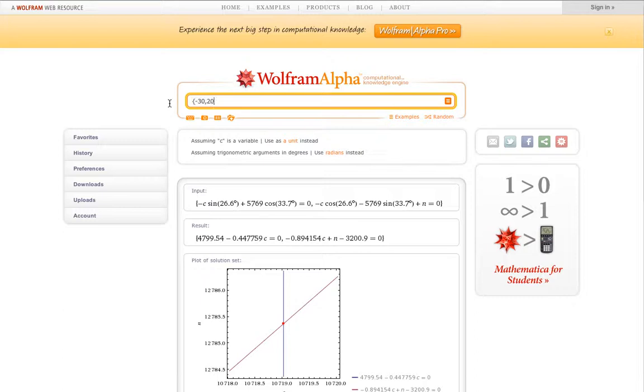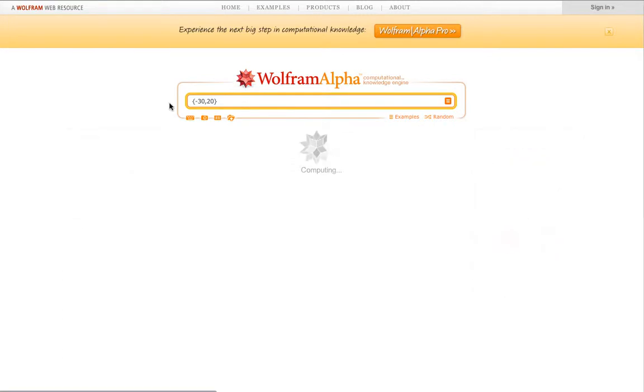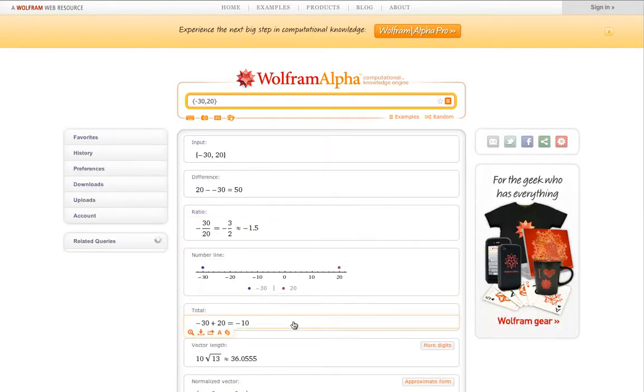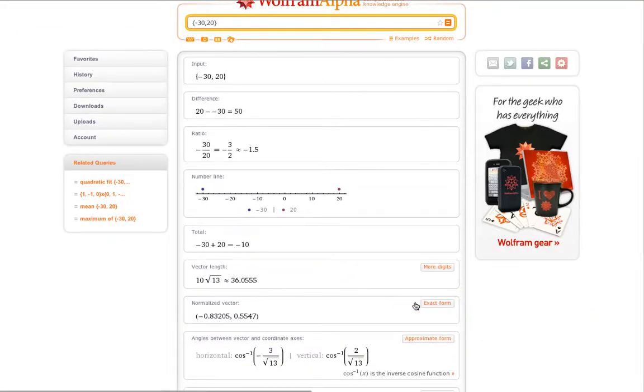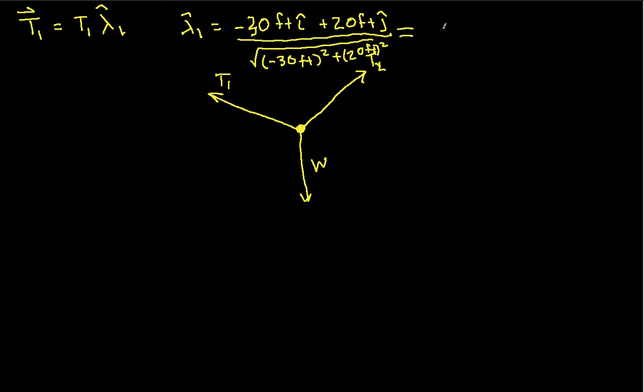So I have minus 30 and 20 and I just typed that in curly braces. And one of the things that it finds is the vector length, so if you want to know the square root of minus 30 squared plus 20 squared, that's what it is. And it also gives me a normalized vector. And if I put this in approximate form, I see that my normalized vector is minus 0.832 i-hat plus 0.555 rounding to three digits j-hat. So if I go back, I can write this then as minus 0.832 i-hat plus 0.555 j-hat. And so I now have an expression for T1. Again, I don't know the magnitude of T1, but I will solve for that momentarily.